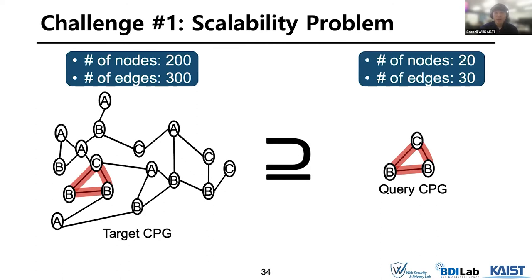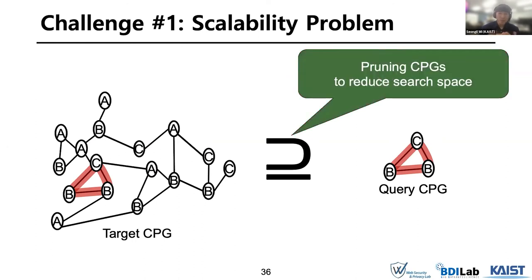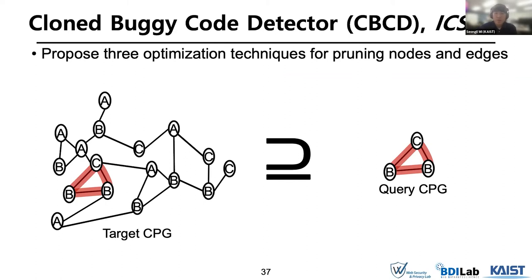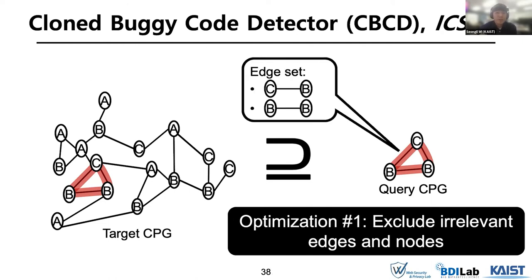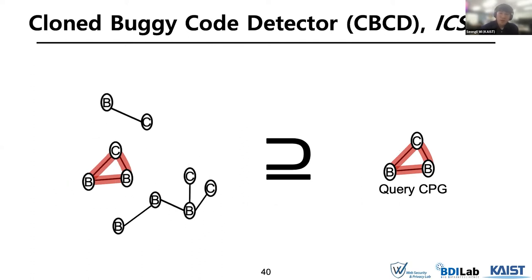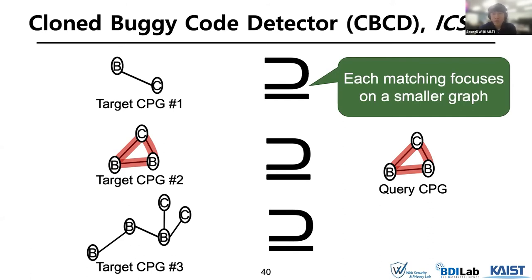For example, let's assume that the number of nodes and edges of the target CPG and query CPG are as follows. Even using VF2, which is known as the best matching algorithm, it requires a huge number of comparisons. To solve this problem, we prune the CPGs to boost the efficiency of matching. We leverage three optimization techniques introduced in CVCD for pruning graphs. One of these techniques excludes irrelevant edges and nodes: because the query CPG only has edges of certain types, it removes all edges and nodes of the target CPG that are not in the edge set of the query CPG. Through this optimization, each matching focuses on a smaller graph, boosting efficiency.